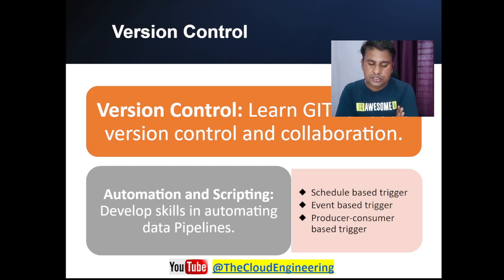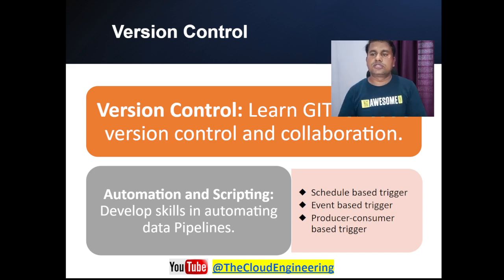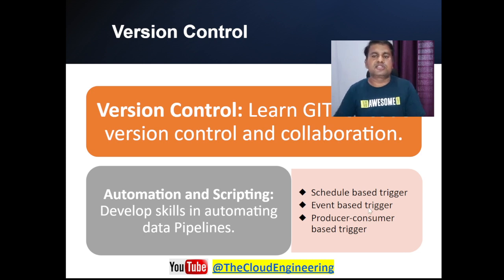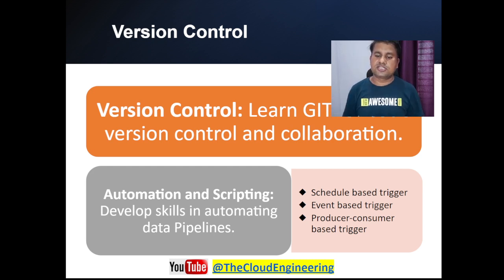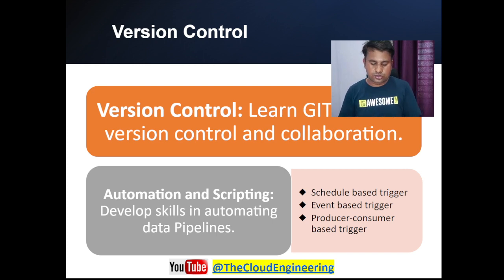Once your code is ready, you need to think about automation and scripting. For a data processing project, you may be processing data at a defined schedule, or it can be event-based — for example, a file arriving in some directory triggers the data processing. Another scenario is producer and consumer, where one process is processing the data and another is consuming it. You should be aware of how to schedule your code so it can trigger on a defined schedule and process your data automatically without any manual intervention.